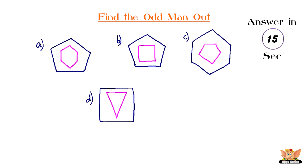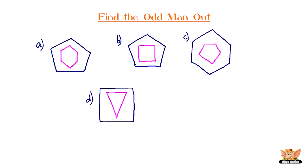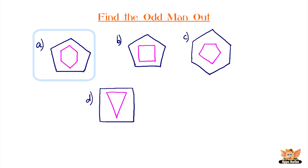The clock is ticking. The odd one is A. In all the other figures, the polygon inside has one side less than the polygon outside. Please do not forget to subscribe.